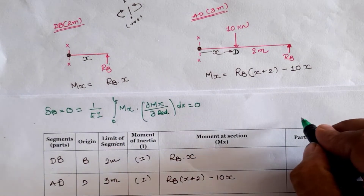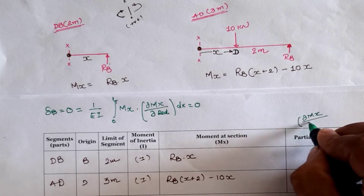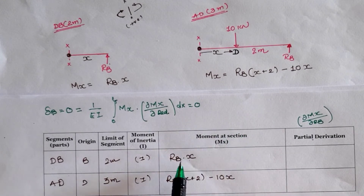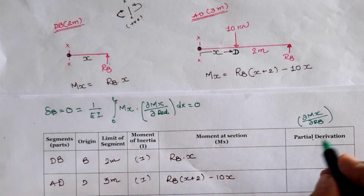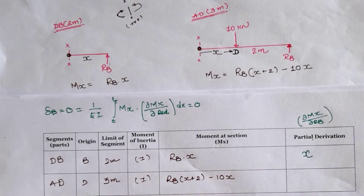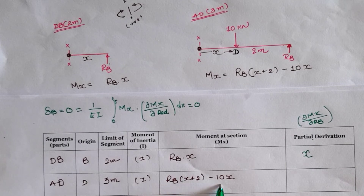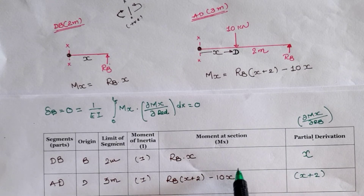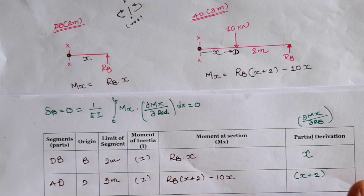We compute the partial derivative ∂M/∂RB for each segment. For DB, M = RB·x, so ∂M/∂RB = x. For AD, M = RB(x + 2) − 10x, so ∂M/∂RB = (x + 2), since the term −10x does not contain RB and its partial derivative is zero.